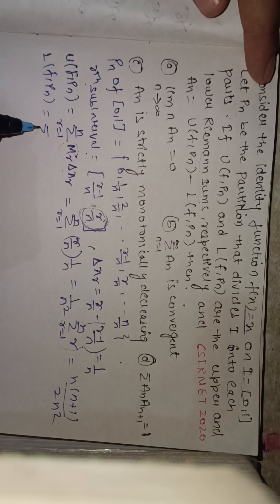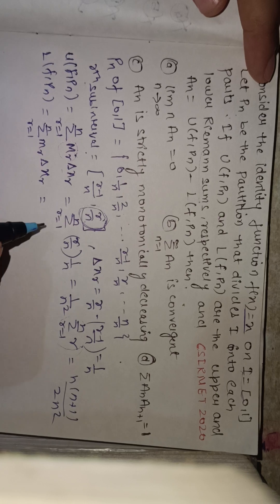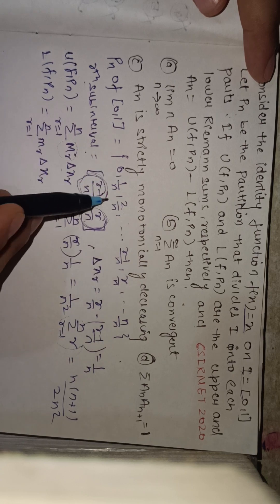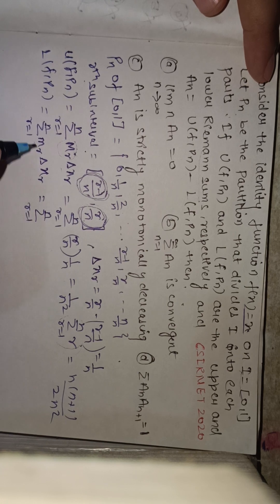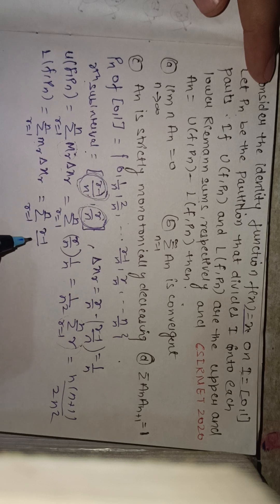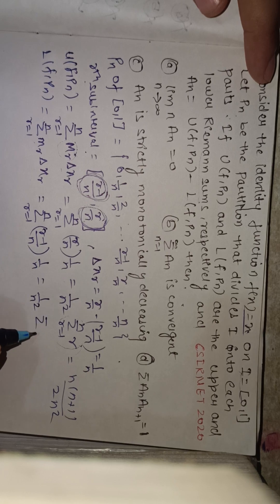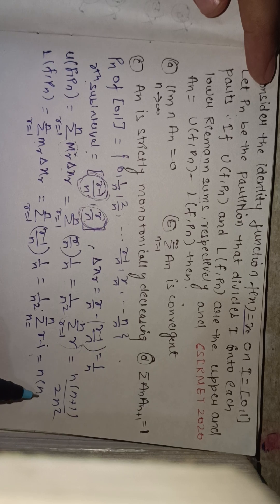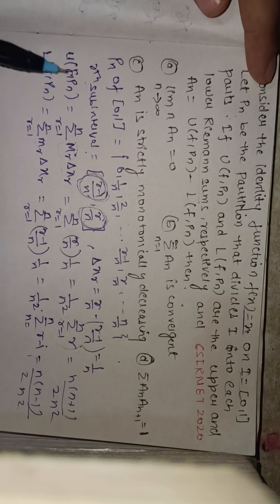The lower Riemann sum L(f,Pn) = summation from r = 1 to n of mr · Δxr. Here mr is the infimum of f on the r-th sub-interval. We choose the lower limit (r-1)/n and put it in the function, giving (1/n²) · summation of (r-1) from r = 1 to n. This is the sum of the first (n-1) natural numbers, which equals n(n-1)/2. So L(f,Pn) = n(n-1)/(2n²).